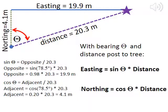So, to summarize, we can easily calculate the easting and northing coordinates from our reference corner post using two parts of the famous SOHCAHTOA mnemonic.